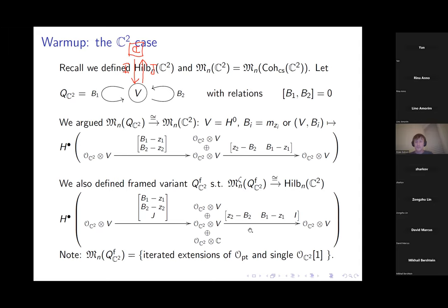This is going to be the flavor of the general construction. We'll have some principal quiver associated to a threefold — it'll be a quiver with potential instead of a Nakajima quiver, the heuristic being it's three-dimensional instead of two-dimensional. Then there'll be some framing coming from the choice of auxiliary object, which in this example is the structure sheaf of C² shifted down by one.